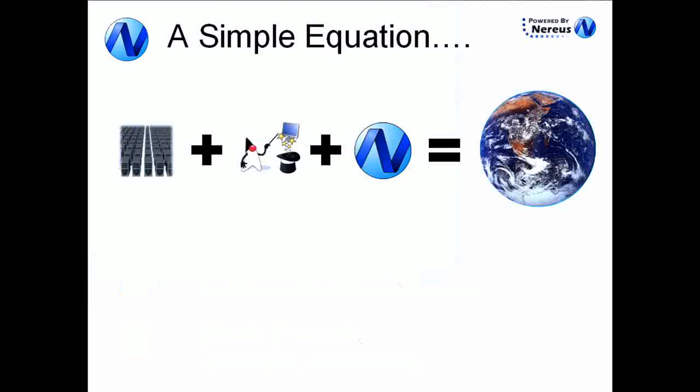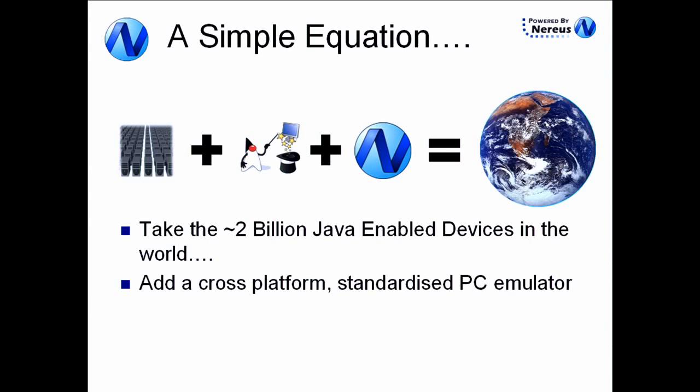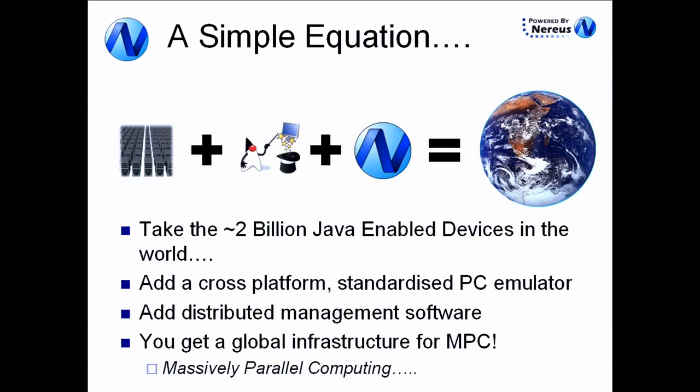Here's a simple equation I want to propose. We have loads and loads of idle machines on the left-hand side. Then we add JPC — a cross-platform standardised PC emulator — add some distributive management software, and hey presto, we get a global infrastructure for computation.